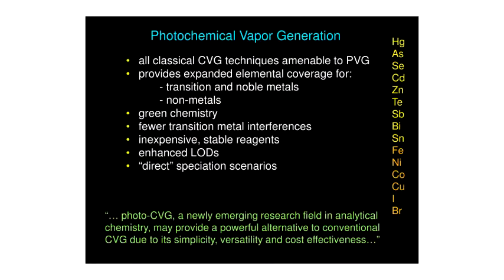In summary, photochemical vapor generation is amenable to all the elements that chemical vapor generation currently encompasses, but it provides expanded elemental coverage to other metals and non-metals. It is a green chemistry using only formic acid and acetic acid, with fewer transition metal interferences. These reagents are very inexpensive compared with tetrahydroborate and are infinitely stable, and direct speciation scenarios can be conceived, such as the separation of selenium four from selenium six.